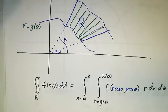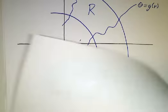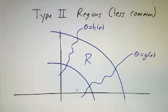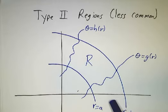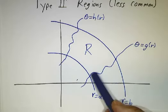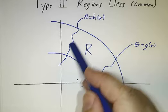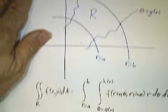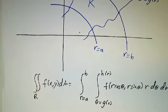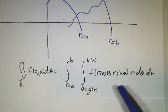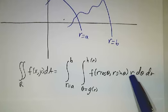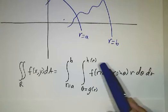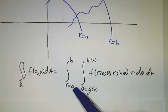Those are type 1 regions. We also have type 2 regions, which is where r goes from a definite initial value a to b. But its theta is, the boundaries are theta as functions of r. And there you integrate over d theta first, but it's still r times d theta dr. You integrate as theta goes from g of r to h of r and as r goes from a to b.